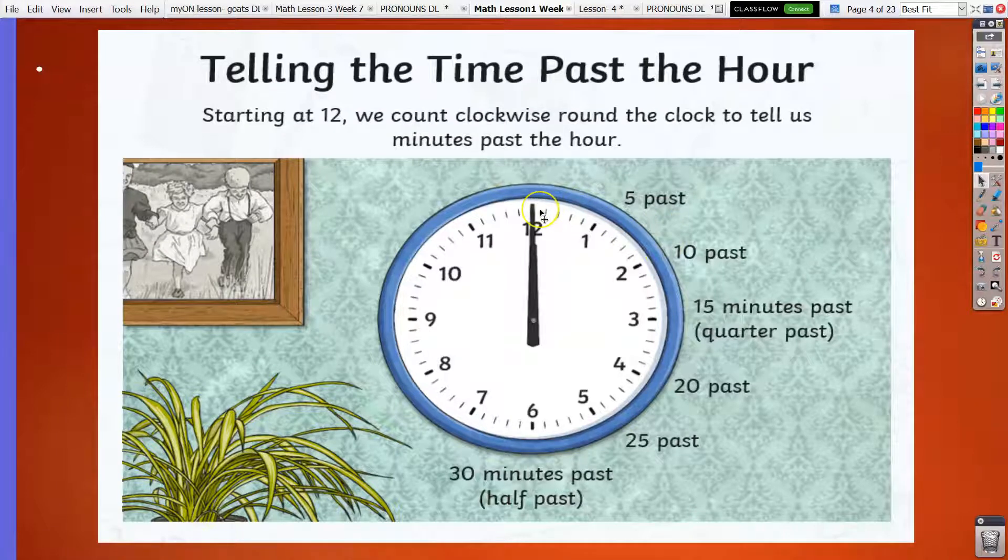Starting at 12, we count clockwise around the clock. So each of the numbers represents five minutes, five minute intervals. So you may use, for instance, your five times table.